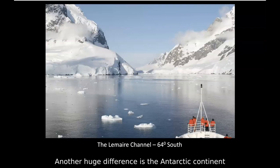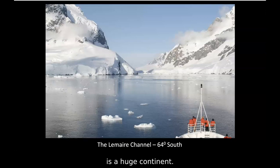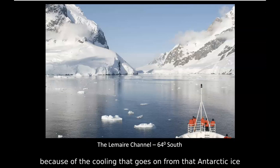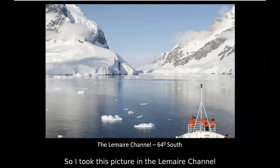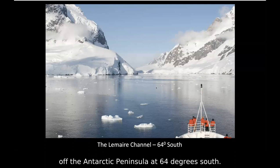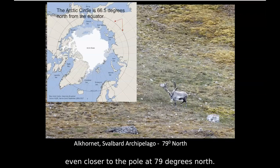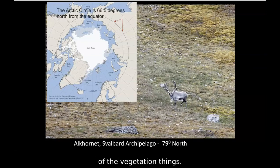Another huge difference is that Antarctica is a massive continent with a huge Antarctic ice sheet that super-cools the area. Similar latitudes look quite different because of this cooling effect. I took a picture in the Lemaire Channel off the Antarctic Peninsula at 64 degrees south, and another in the Svalbard archipelago at 79 degrees north — even closer to the pole — and there's quite a difference in terms of vegetation.